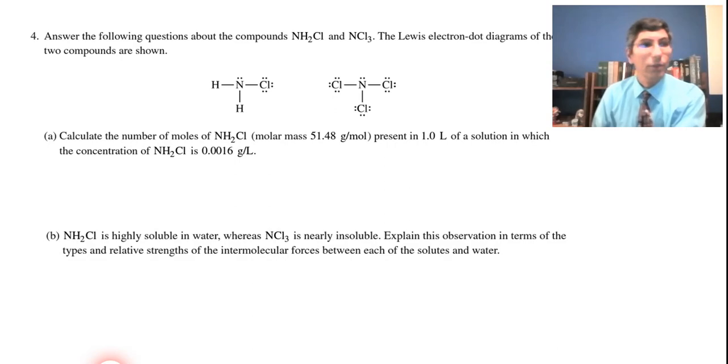Sometimes College Board gives answers that are a little different than mine, and sometimes I just get the wrong answer. So let's just see how I do. Number four here, we have these two compounds NH2Cl and NCl3, and we have the Lewis electron dot diagrams given here.